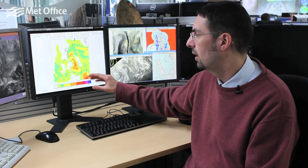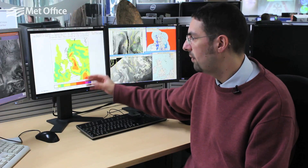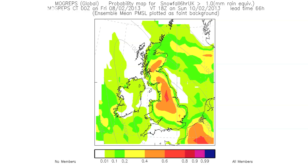From this I can ascertain that the chance of the heaviest and most significant snowfall is perhaps over the higher ground in central Scotland, and then further south in an area extending just about into East Anglia but mainly across the Midlands into northeastern Wales and into northern England.